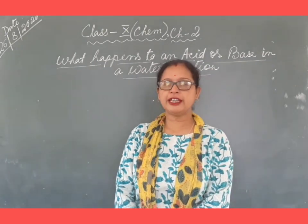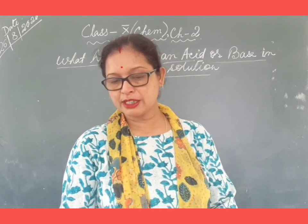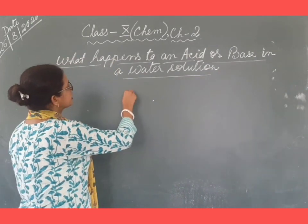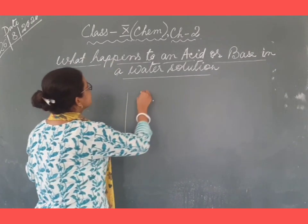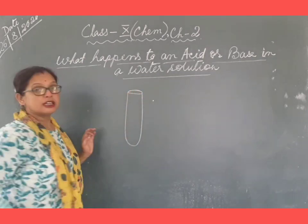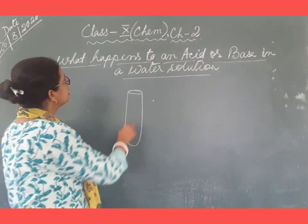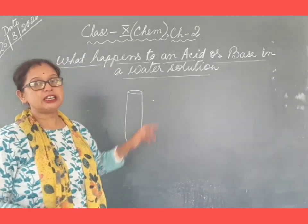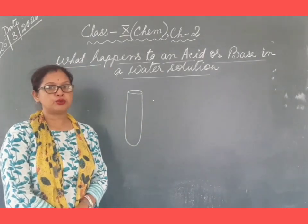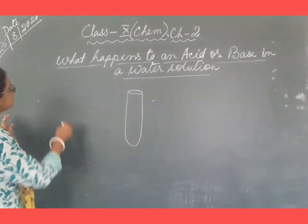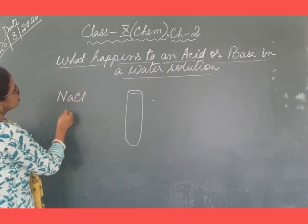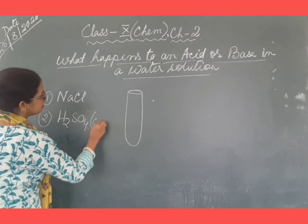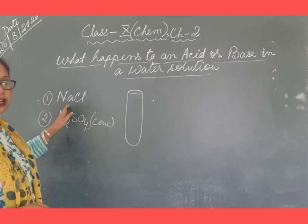We can look at this with the help of an activity given in our NCERT book, page number 23, activity number 2.9. For this activity we need to set up an apparatus using a boiling tube, a rubber cork for closing the mouth of the boiling tube, and a small glass delivery tube. The chemicals needed are sodium chloride (NaCl) and concentrated sulfuric acid.